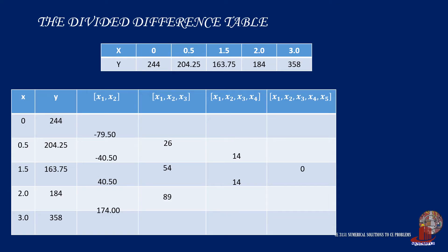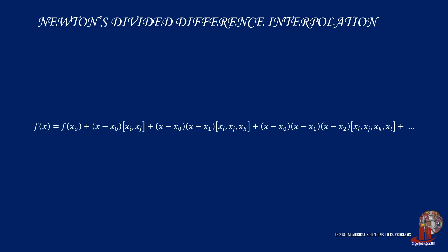We can now interpolate the required function of x by using the leading forward differences, which are negative 79.5, 26, and 14.